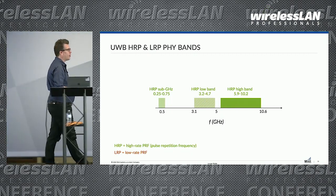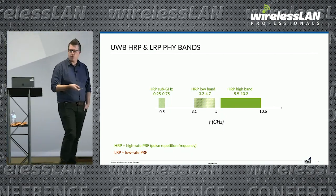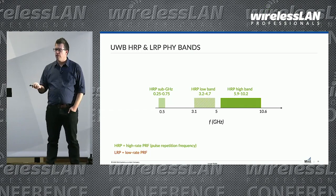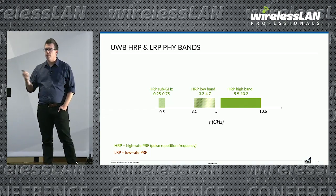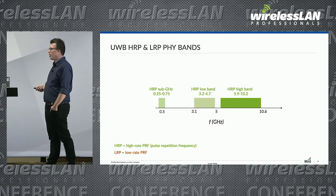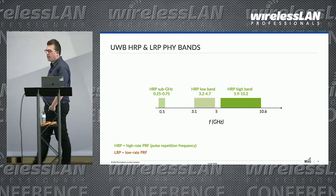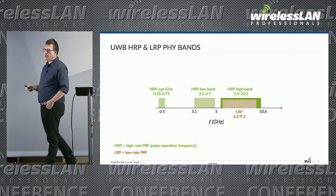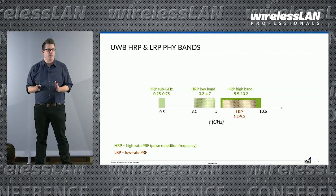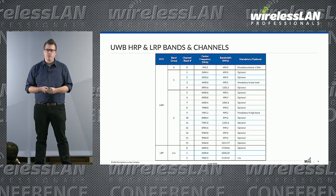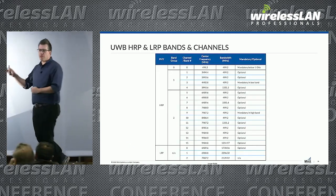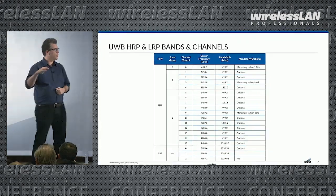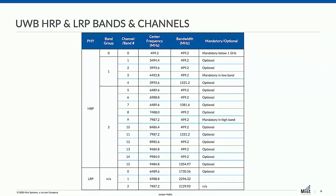Diving a bit deeper and separating the PHYs for ultrawideband: the high-rate PHY is operating in these frequency bands. As I mentioned, there is some support for sub-1 gigahertz, though it hasn't really been implemented too much lately. The low-rate PHY only occupies 6.2 to 9.2 gigahertz. The key point about the channels and the bands is there are some low bands and high-rate PHY and some high bands, with mandatory channel support in each of those — that's the one thing I want you to take away from that.